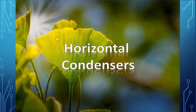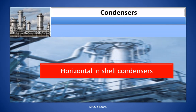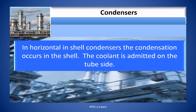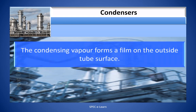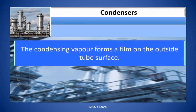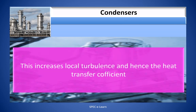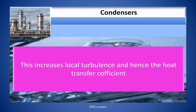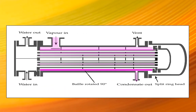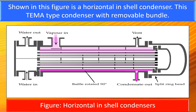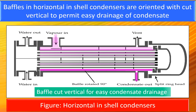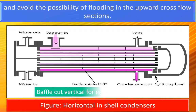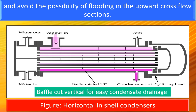In horizontal in-shell condensers, the condensation occurs in the shell and the coolant is admitted on the tube side. This is the most commonly used type of condenser. The condensing vapor forms a film on the outside tube surface; the film falls from tubes at higher levels to lower tubes, increasing local turbulence and hence the heat transfer coefficient. Baffles in horizontal in-shell condensers are oriented with a cut vertical to permit easy drainage of condensate and avoid the possibility of flooding in the upward cross-flow sections.